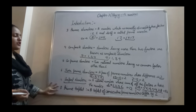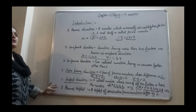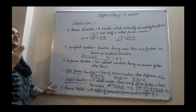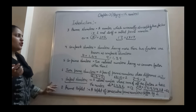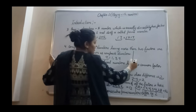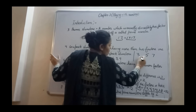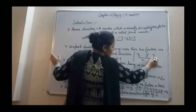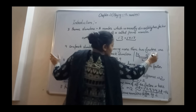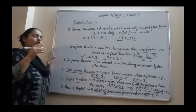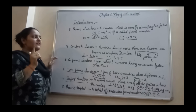The last type is prime triplet: a triplet of consecutive prime numbers that differ by 2. When you have 3 prime numbers and the difference between each consecutive pair is 2, that is called a prime triplet. For example, 3, 5, and 7: the difference between 3 and 5 is 2, and the difference between 5 and 7 is 2. So 3, 5, 7 is the prime triplet. There is only one prime triplet, and that is 3, 5, and 7.